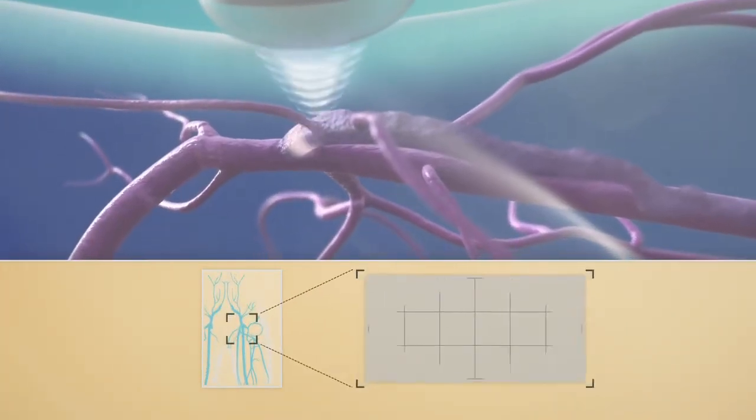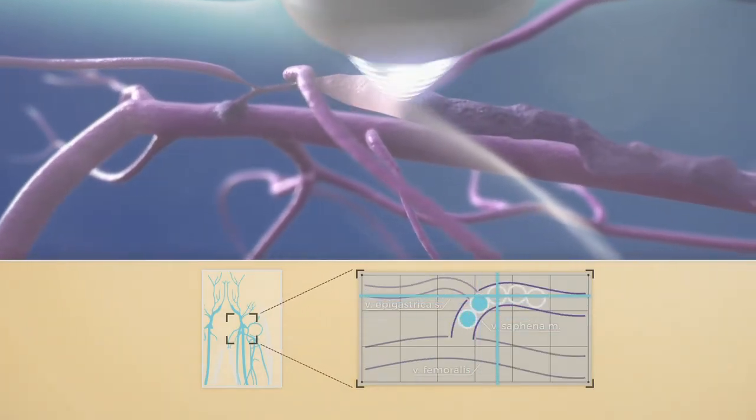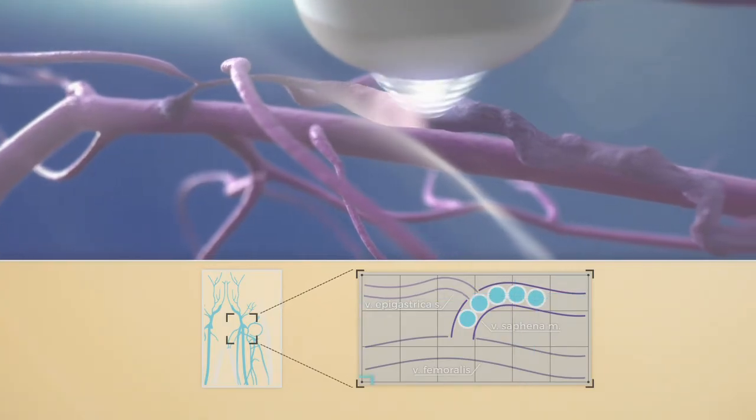Echotherapy can be safely applied as close as 2 mm from the saphenous femoral junction, literally eliminating the risk of stump formation after treatment.